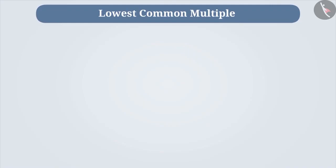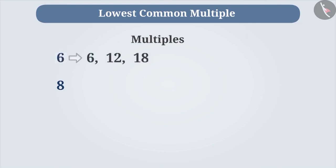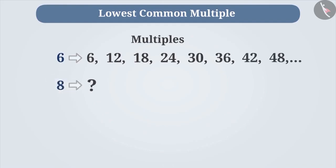Let's now learn about lowest common multiple or LCM. To understand this, let's find the multiples of 6 and 8. The multiples of 6 are 6, 12, 18, 24, 30, 36, etc. Similarly, can you tell me the multiples of 8? Think about it.